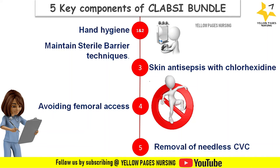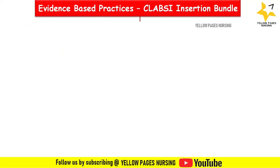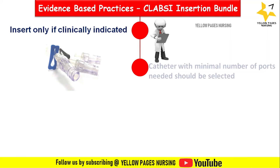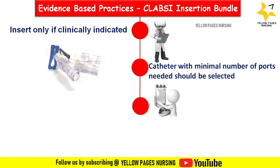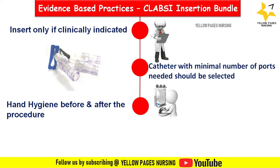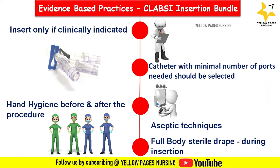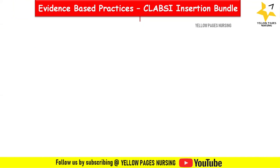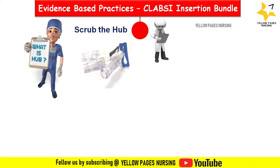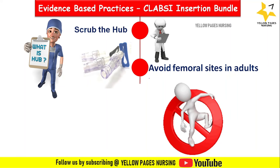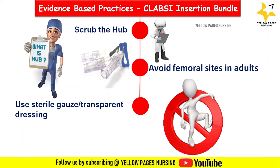Insertion bundle interventions include: insert only if clinically indicated; select a catheter with the minimal number of ports needed; perform hand hygiene before and after the procedure; use aseptic technique with full PPE; use a full body sterile drape during insertion; scrub with 2% chlorhexidine with alcohol for skin disinfection and allow to dry for 30 seconds; avoid femoral site in adults; and use sterile gauze or transparent dressing.